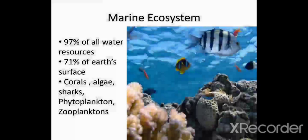Marine ecosystem covers about 71 percent of Earth's surface and 97 percent of all the water resources. Marine ecosystem includes corals, algae, sharks, phytoplanktons, zooplanktons, and different types of fishes.